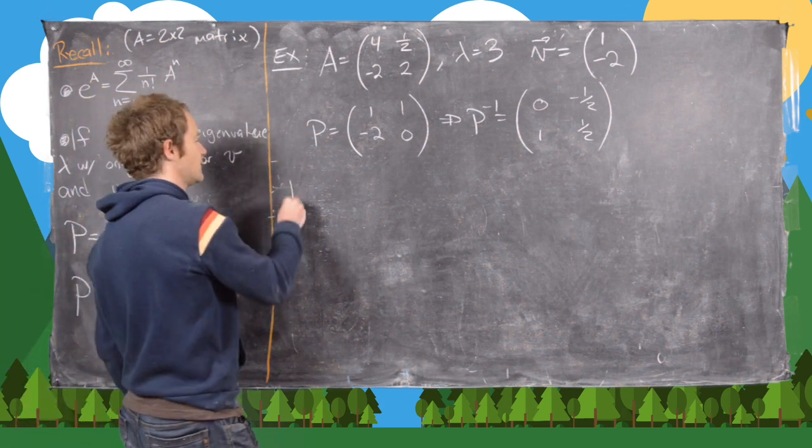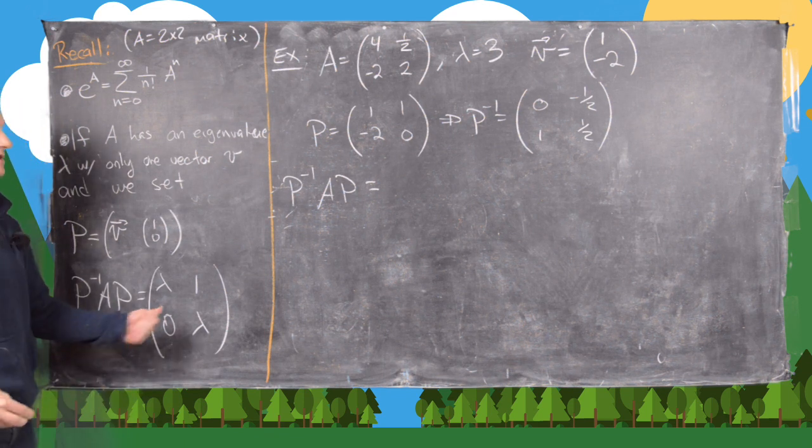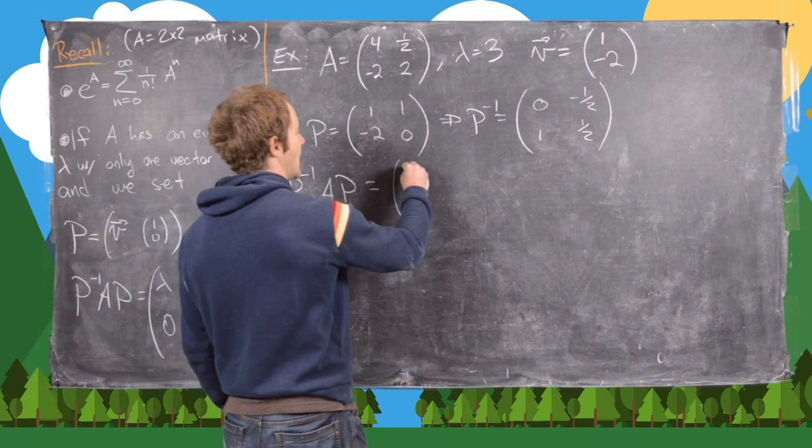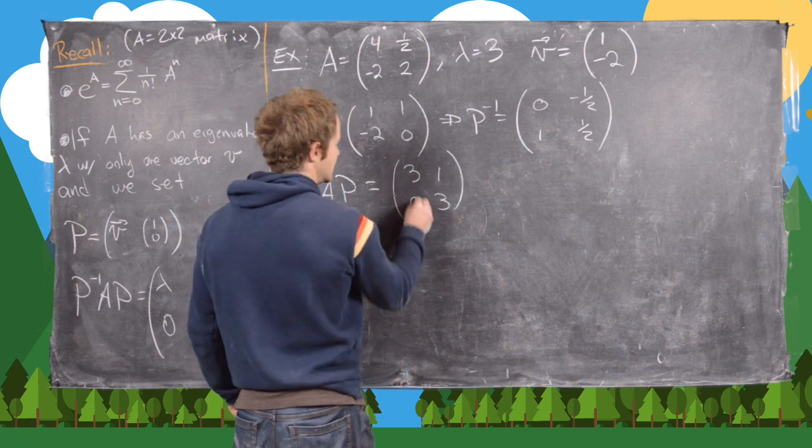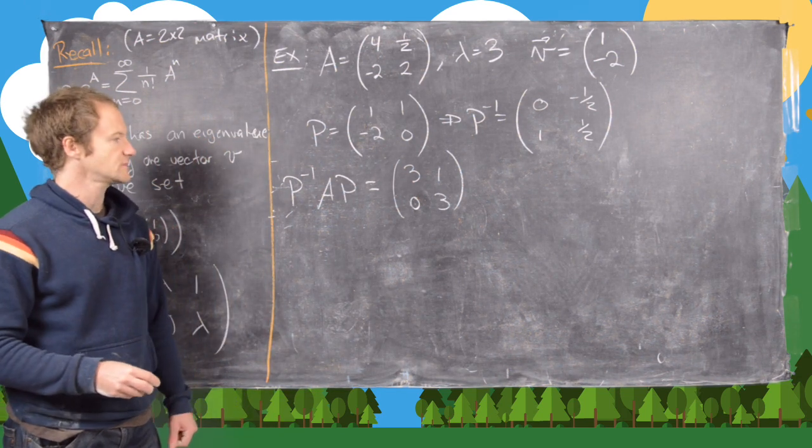Okay. And then P⁻¹AP. So I'm just going to use this result, although you can check this by hand if you want to. This is going to be [3, 1; 0, 3]. So we've got 3s on the diagonal, 1 on the off diagonal. Okay.